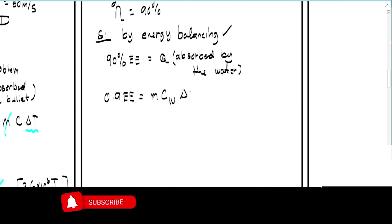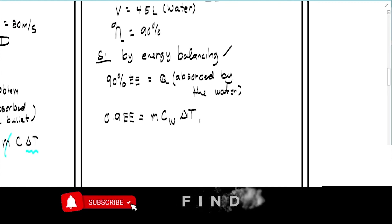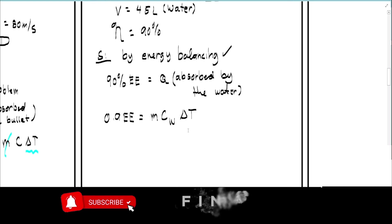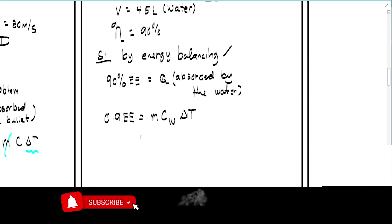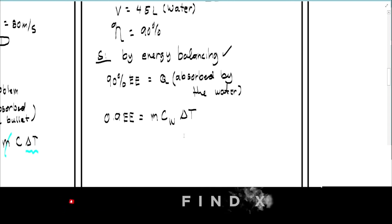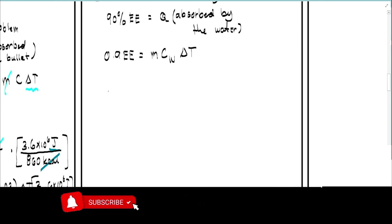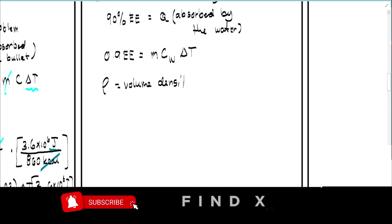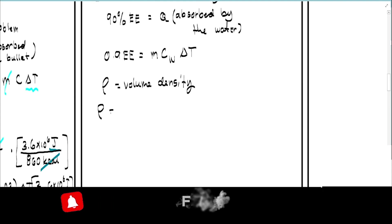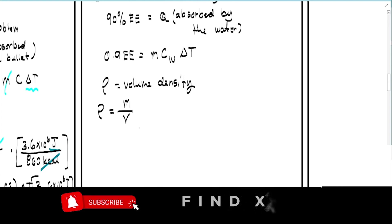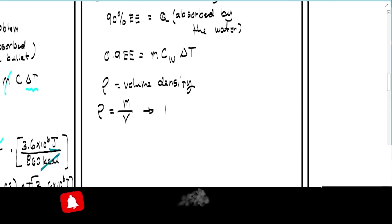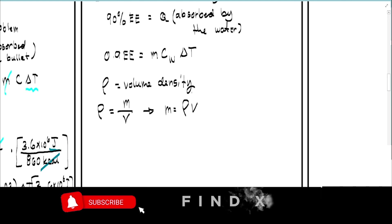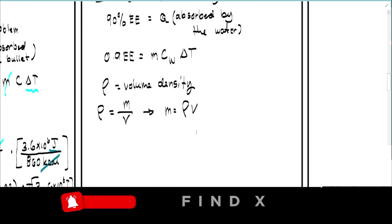The c here is the specific heat of water. We have delta-T but we don't have mass. We are looking for EE. To find mass from the given volume, we use the relationship: density equals mass over volume.